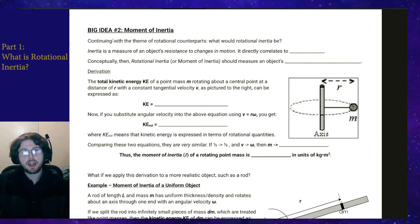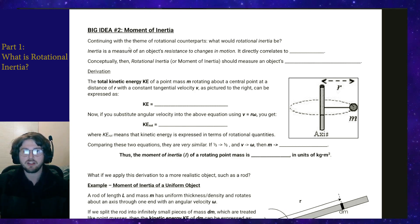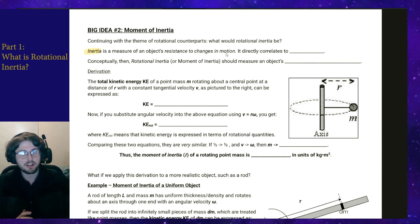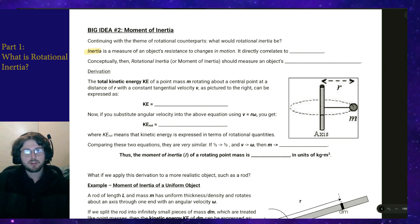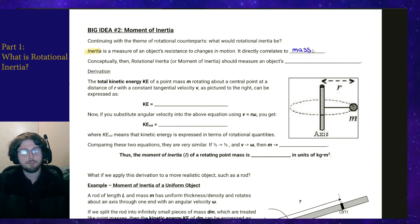I'm going to start out by thinking about what our traditional definition of inertia is. Inertia itself is a measure of an object's resistance to changes in motion, meaning the higher an object's inertia is, the harder it is to move or to stop. If we think about what value that correlates to, generally it correlates directly to mass.